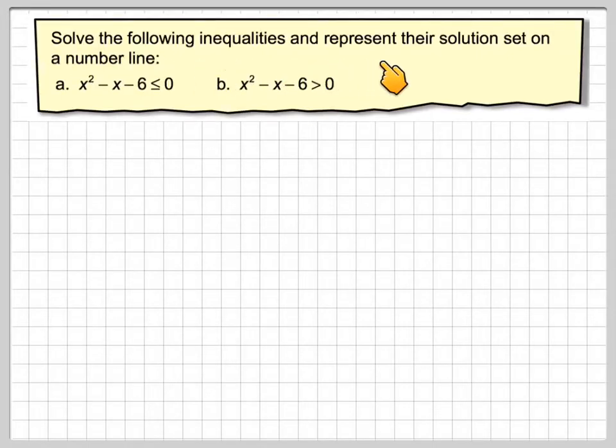Solve the following inequalities and represent the solution set on a number line. So we've got x squared minus x minus 6 is less than or equal to 0, and then the same quadratic function x squared minus x minus 6 is greater than 0. There are several ways of doing this, but in this video I'm just going to show you the graphical method.